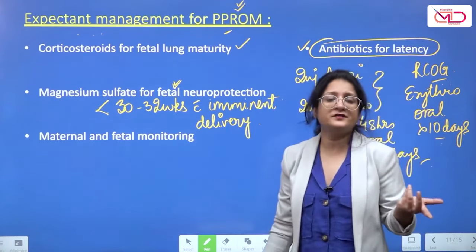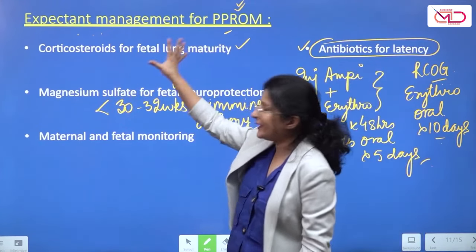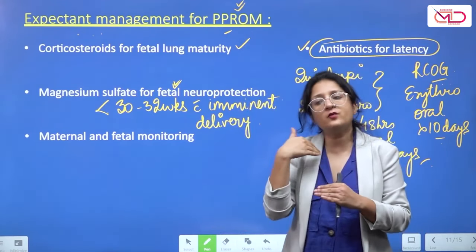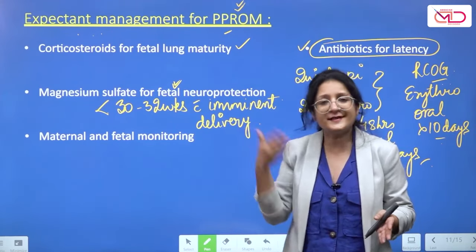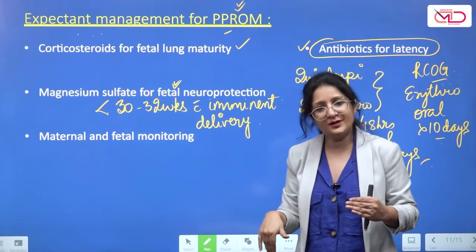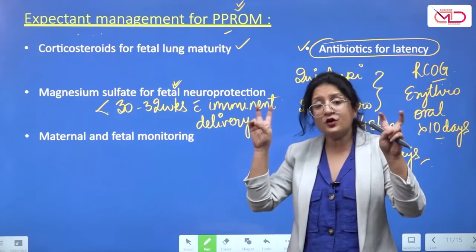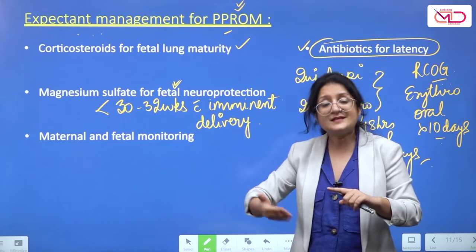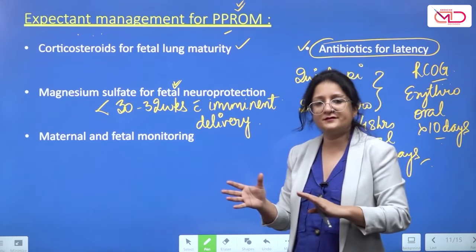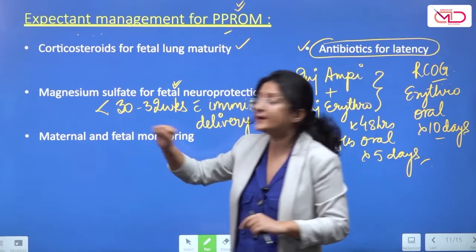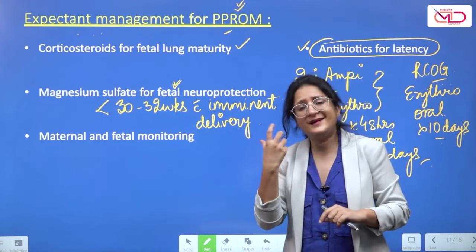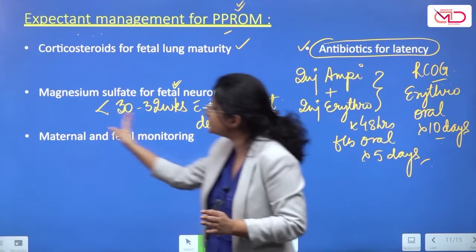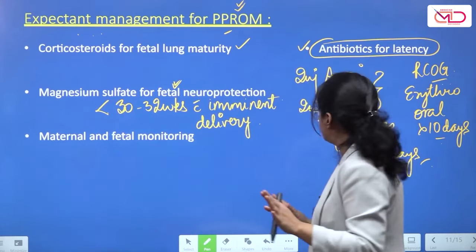Fourth component: maternal and fetal monitoring throughout expectant management. The patient is hospitalized and monitored for development of complications — infection, fetal distress, placental abruption. Repeat CBC at least on alternate days, maintain temperature and pulse charting, ask the woman to keep a daily fetal movement record, and plan intermittent CTG monitoring.